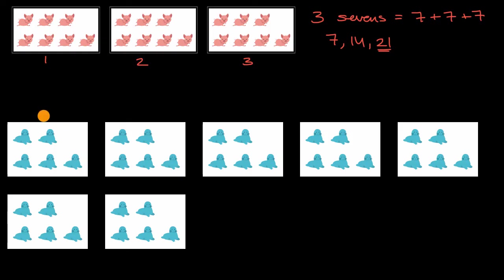These blue seals have once again been grouped. Let's see how many groups there are. There are one, two, three, four, five, six, seven groups. And how many are in each group? Well, we can see that they're all groups of one, two, three, four, five. They're equal groups.